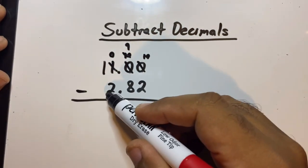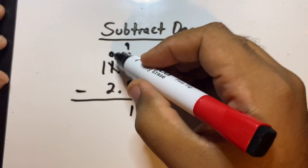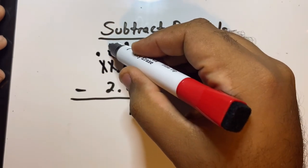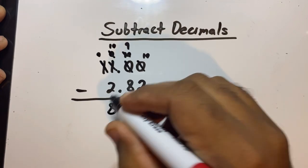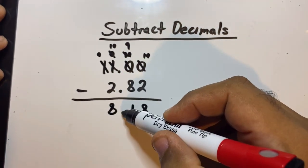Now we can subtract. 10 minus 2 is 8. 9 minus 8 is 1. We can't do 0 minus 2, remember it's too small to subtract, so we have to borrow from this 1 again. So now this 1 becomes a 0 here, and this 0 becomes a 10. So 10 minus 2 is 8. In subtraction, as long as the decimal points are in the same spot, they don't move.